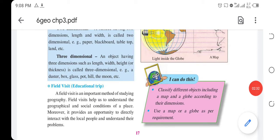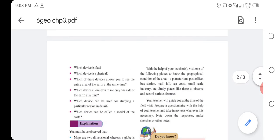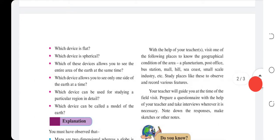Field Visit Education Trip: A field visit is an important method of studying geography. Field visits help you to understand the geographical and social conditions of a place. Moreover, they provide an opportunity to directly interact with local people and understand their problems. With the help of your teacher, visit one of the following places to know the geographical conditions of the area: a plateau area, post office, bus station, mall, hills, seacoast, small-scale industry, etc.